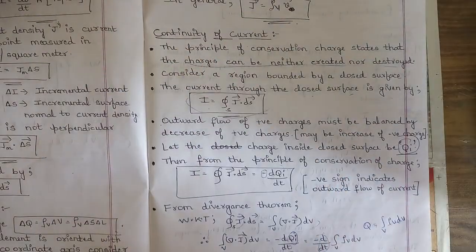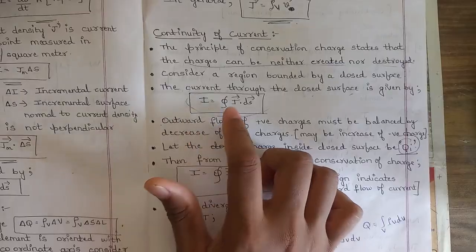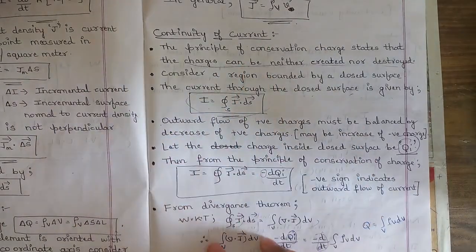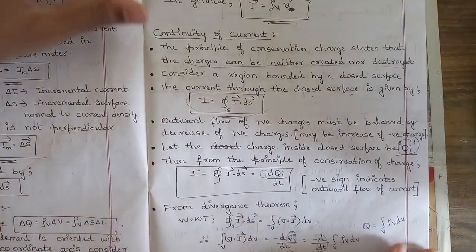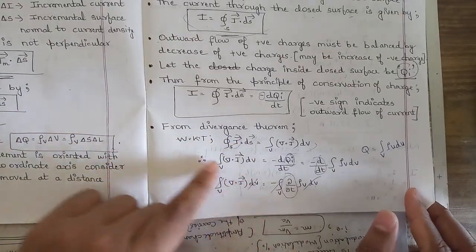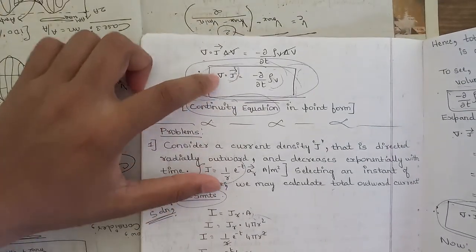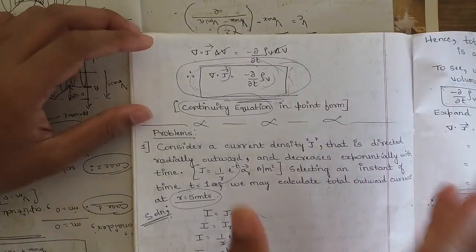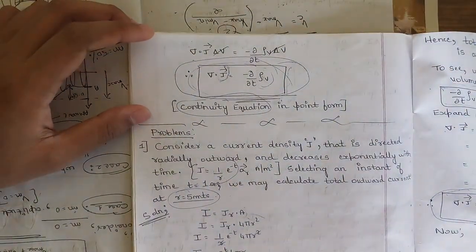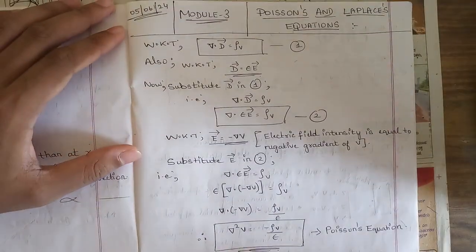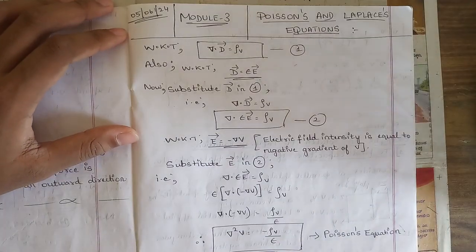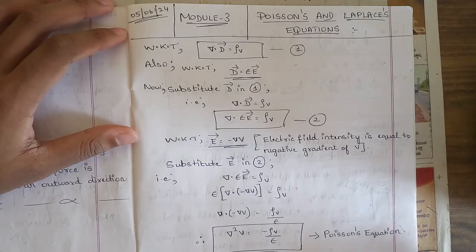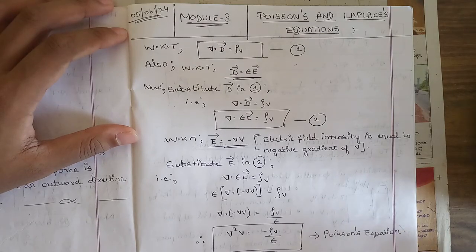Also very important and multiply repeated is the derivation of the continuity equation — continuity of current. The relationship starts with I = ∮ J · dS. Using current density, conservation principles, and the divergence theorem, we obtain the continuity equation: ∇ · J = −∂ρ_V/∂t. Recap of Module 1 and 2: Coulomb's Law, Electric Field Intensity, Electric Flux Density, Gauss's Law, Divergence, Continuity Equation, Work Done derivations.